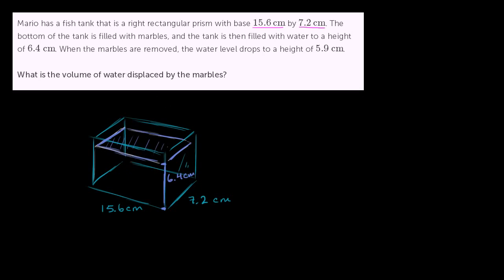When the marbles are removed, and it started off with some marbles on the bottom—they don't tell us how many marbles—when the marbles are removed, the water level drops to a height of 5.9 centimeters. So when they're removed, the water level drops by a little bit to 5.9 centimeters.